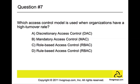Question number seven: which access control model is used when organizations have a high turnover rate? The answer is role-based access control. In role-based access control, access is based on the user's role within the organization. User memberships in roles can be revoked easily and new memberships established as job assignments dictate. This makes the system administrator's job much easier because instead of updating hundreds of individual user privileges, you just update the role for that particular group.